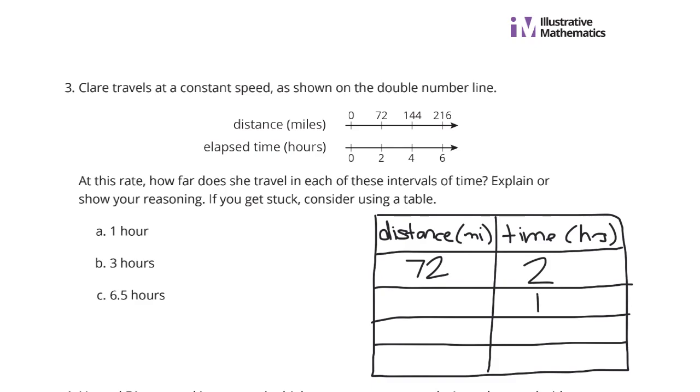We have our distance in miles and our time in hours, and we have our 72 miles in 2 hours. If I want to break that down to 1 hour, I have to divide by 2 to get from 2 to 1, so I'd have to divide by 2 to get from 72 to 36 miles.